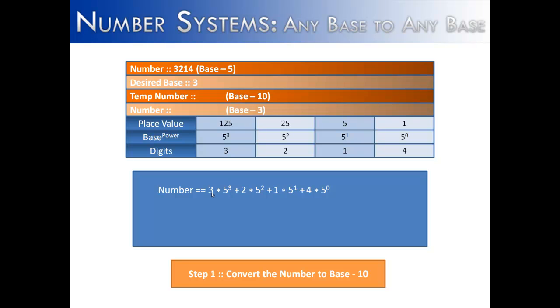So we use the expansion method, and we say 3 times 5 to the power of 3, 2 times 5 to the power of 2, 1 times 5 to the power of 1, and 4 times 5 to the power of 0.